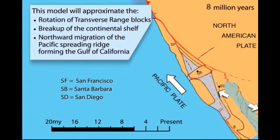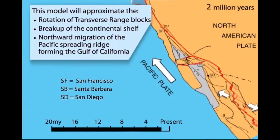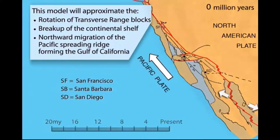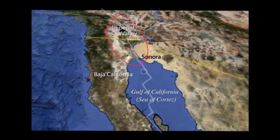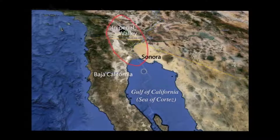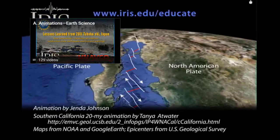The Baja California Peninsula and most of southwestern California is a remnant of the North American continent that was sheared off and moved to its present position. Earthquakes in the Gulf are more of a nuisance than a threat. However, the on-land part of this spreading ridge extends into Baja California, Mexico, and the Imperial Valley of California, where it is transitioning from a ridge-transform boundary to a continental boundary. This area is especially vulnerable because it is underlain by soft sediment that can shake violently during earthquakes. Scientifically, the Gulf is a classic place to study the early stages of the opening of an ocean basin.